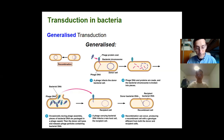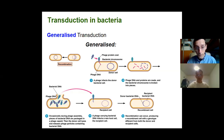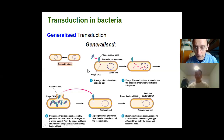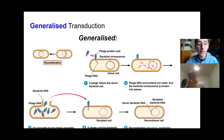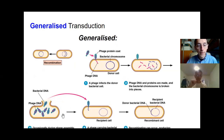A lytic virus will lyse the cell to release the new virions, and that happens in transduction. Viruses make so many offspring that they're not worried if a mistake gets made.